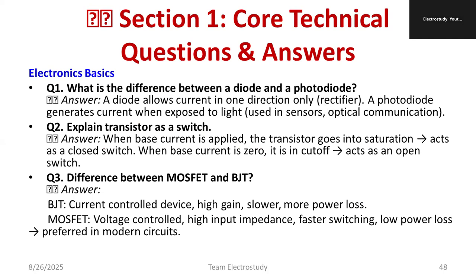Let's start with the first part: core technical questions. From basic electronics, the first question is: what is the difference between a diode and a photodiode? A diode allows only unidirectional flow of current. A photodiode generates current when exposed to light — it is a light-activated diode. A normal diode conducts only in one direction and prevents reverse current flow.